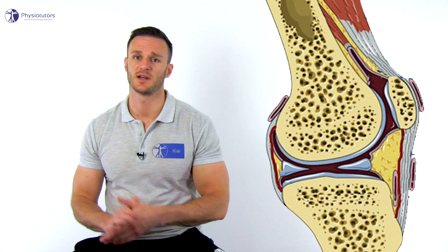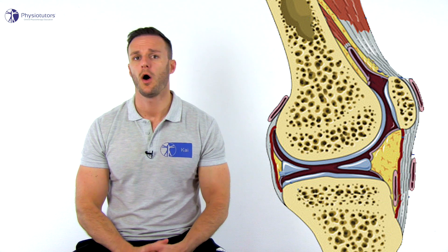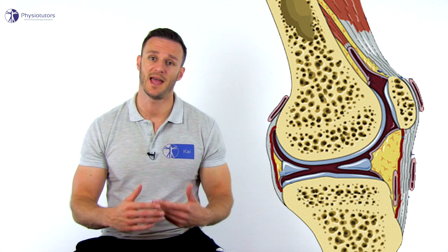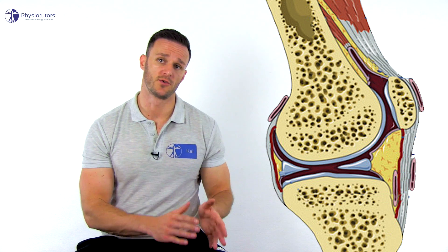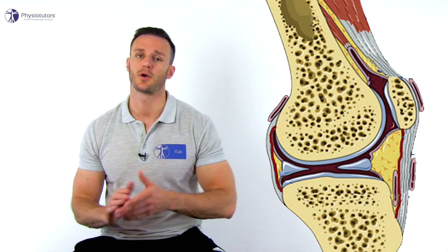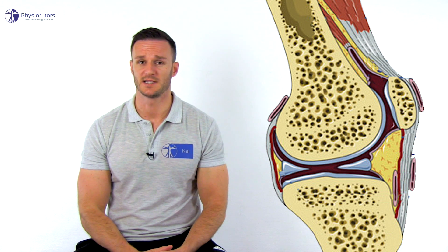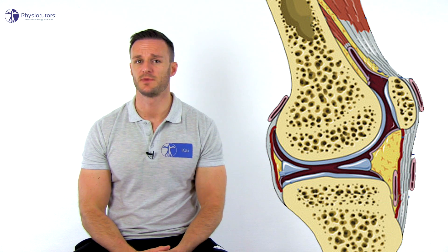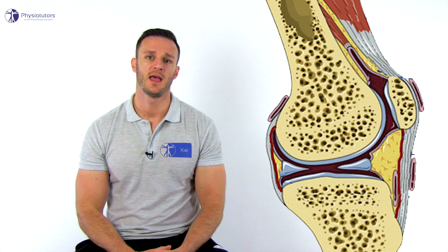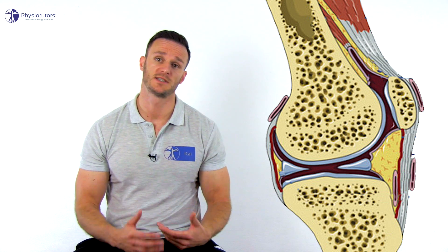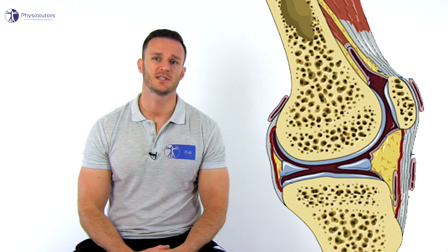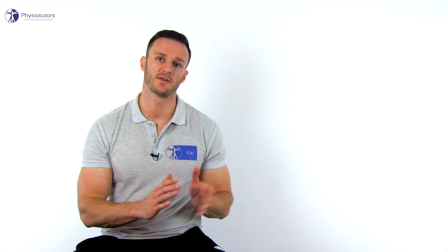Hi and welcome back to Physiotutors. The infrapatellar fat pad is an intracapsular, extrasynovial adipose tissue occupying the anterior knee joint from the inferior pole of the patella to the proximal tibia. As it is highly vascularized and innervated, impingement of the infrapatellar fat pad is a potential source of nociception, causing anterior knee pain that is often overlooked.